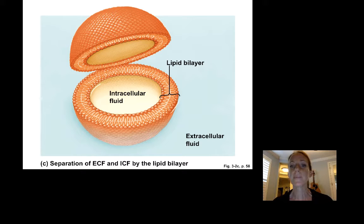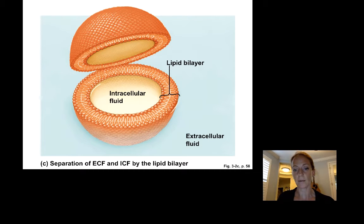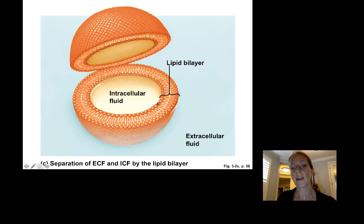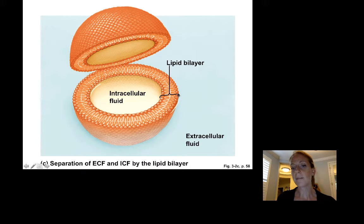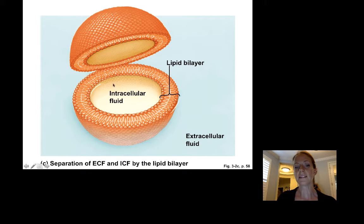Here's a simple diagram of a cell where the phospholipids shown in orange make up the lipid bilayer. There is one layer and a second layer, with the tails pointing inward towards each other to make the lipid bilayer. This lipid bilayer, made up of phospholipids, separates the outside of the cell — the extracellular fluid — from the inside of the cell — the intracellular fluid.